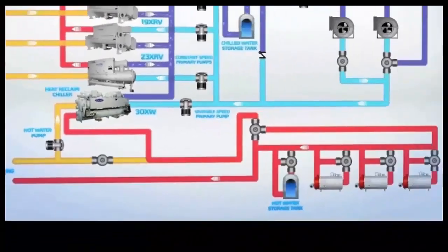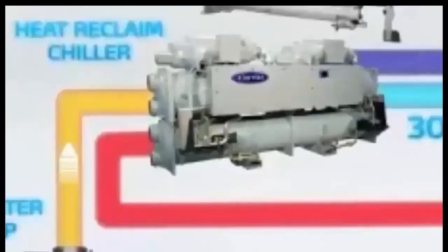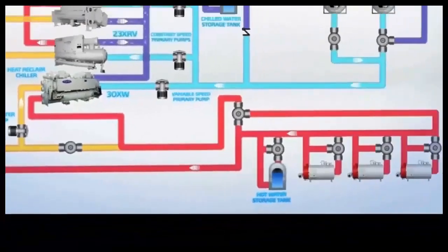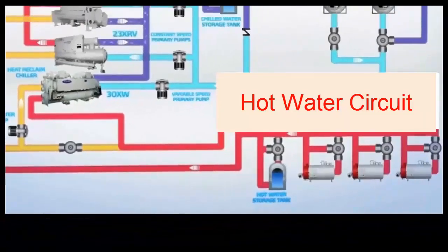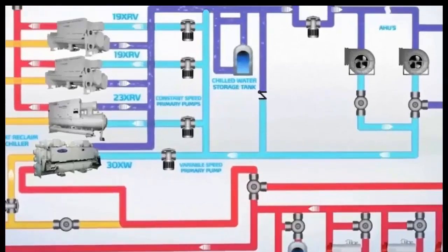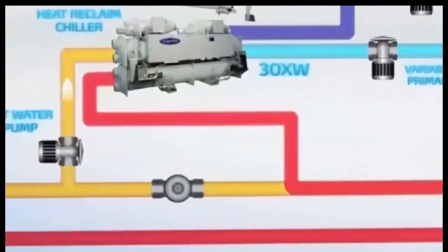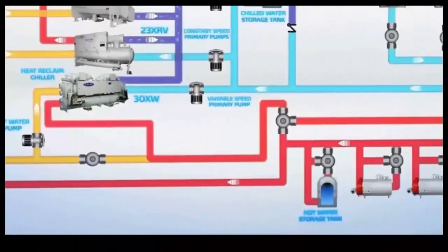In the bottom chiller, the water that cools the condenser is not sent to the cooling tower. Instead, it enters the chiller condenser, receives the heat from it, and is then sent to the hot water circuit. This is an installation where one chiller has a heat recovery system. The three upper chillers handle cooling only, with condensers cooled by the cooling tower. The bottom chiller receives water directly into its condenser, which absorbs the condenser heat, and that heated water is sent to serve the hot water circuit.